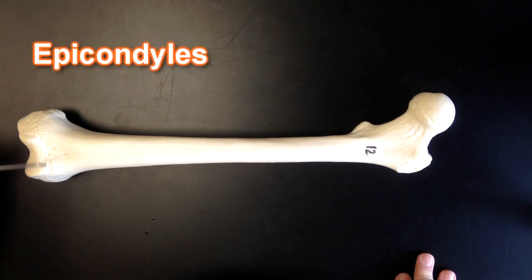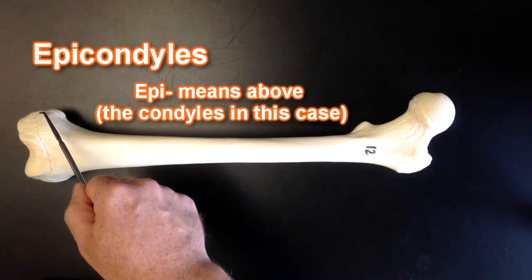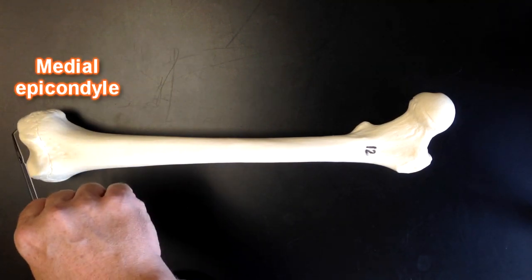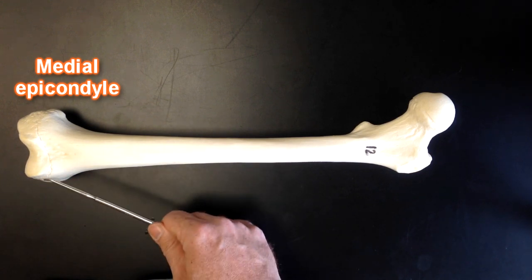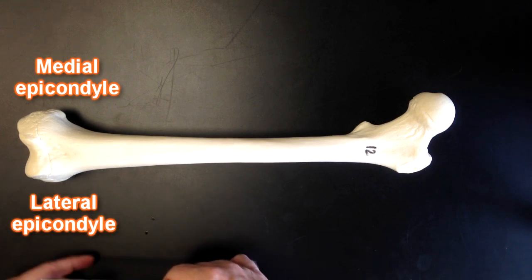The epicondyle would be above the condyle. This would be the medial epicondyle since we're dealing with the medial condyle over here, and then lateral epicondyle on this side since we're dealing with the lateral condyle over here.